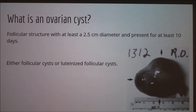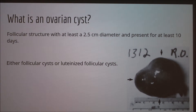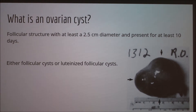So what is an ovarian cyst? Ovarian cysts are follicular structures that have a diameter of at least 2.5 cm or 1 inch that are present for 10 or more days on the ovaries within the absence of a functional corpus luteum. The only practical method to detect cystic ovarian disease is by a rectal palpation of the cow's reproductive tract.